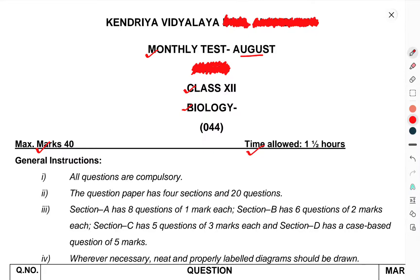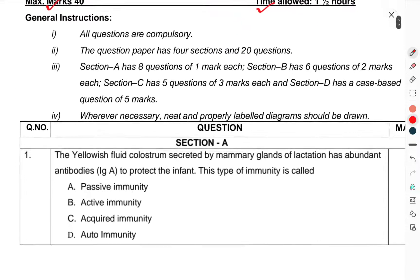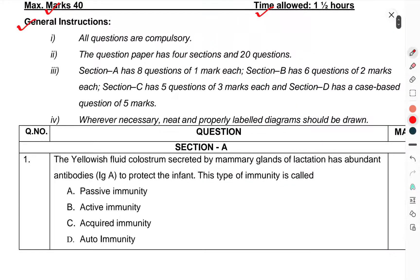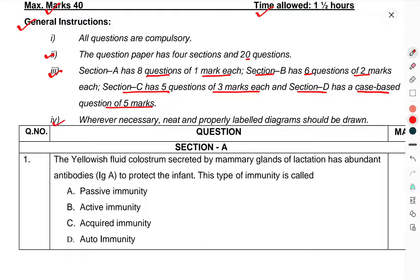Time allowed is 1.5 hours. First, we have to see the general instructions. All questions are compulsory. The paper has 4 sections and 20 questions. Section A has 8 questions of 1 mark each. Section B has 6 questions of 2 marks each. Section C has 5 questions of 3 marks each. Section D has a case-based question of 5 marks. Wherever necessary, neat and properly labelled diagrams will be drawn.